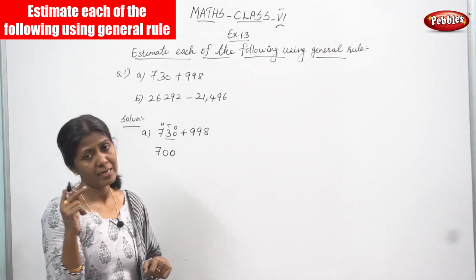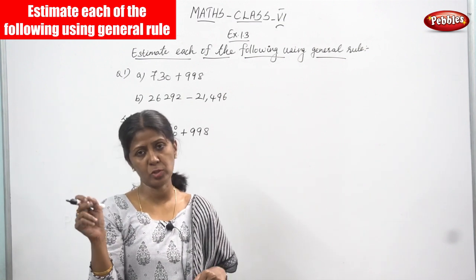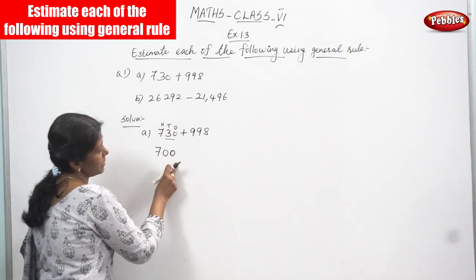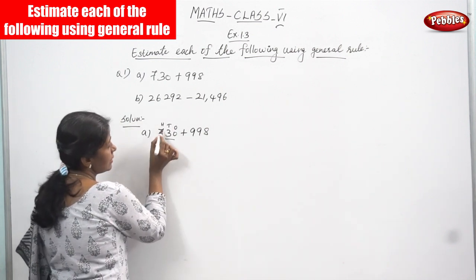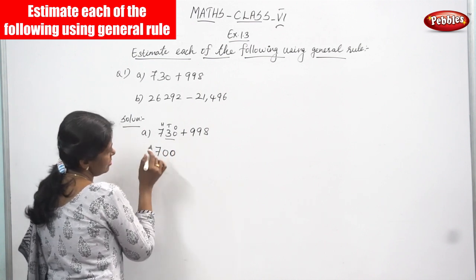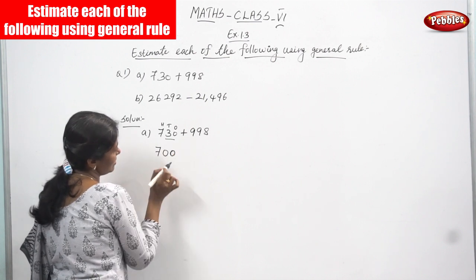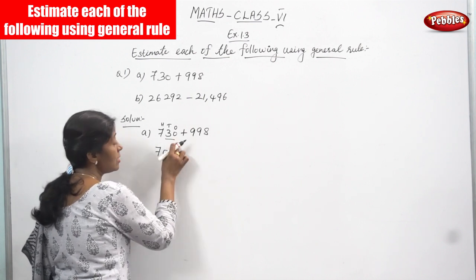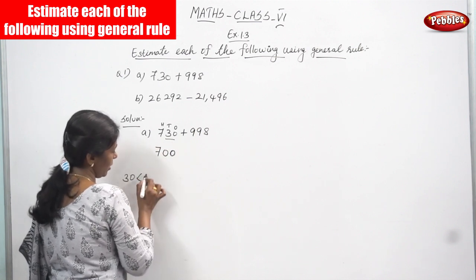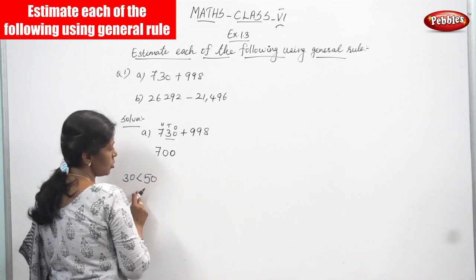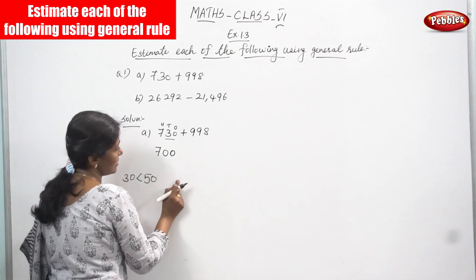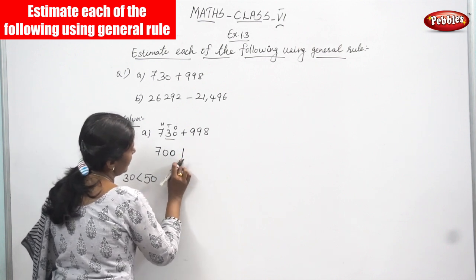Rounding to the nearest 100 means the last two digits become 0. The 10s place is 3 and the 1s place is 0, so that is 30. 30 is less than 50, so you write 7 as it is and the last two digits become 0. The answer is 700. Round to the nearest 100.